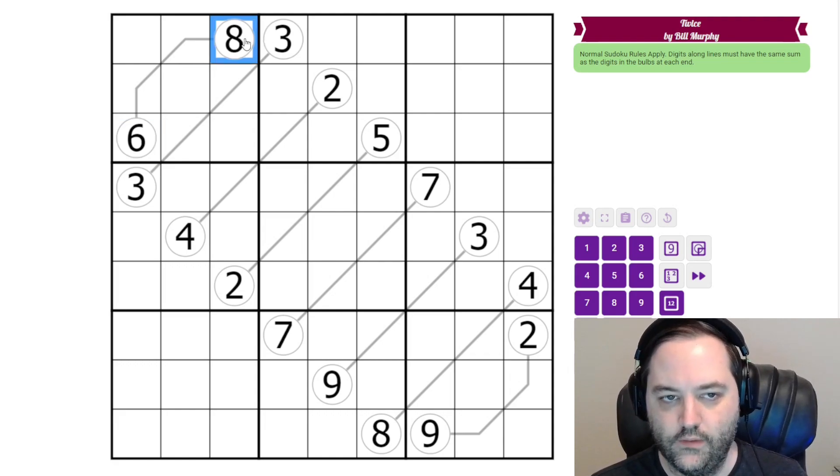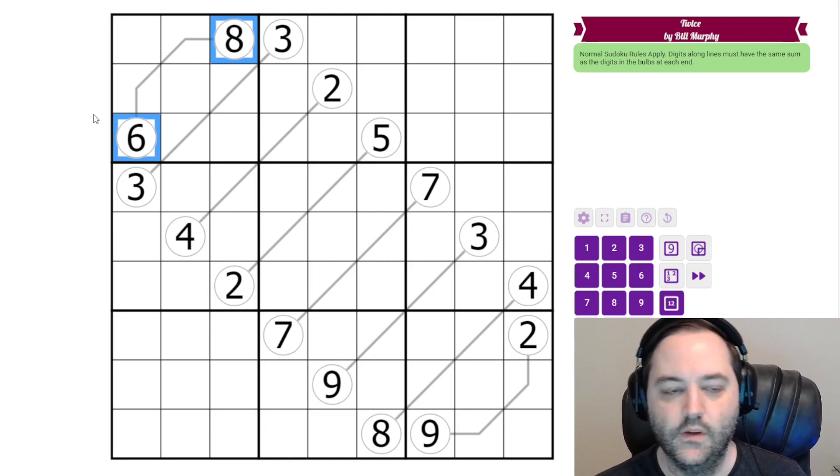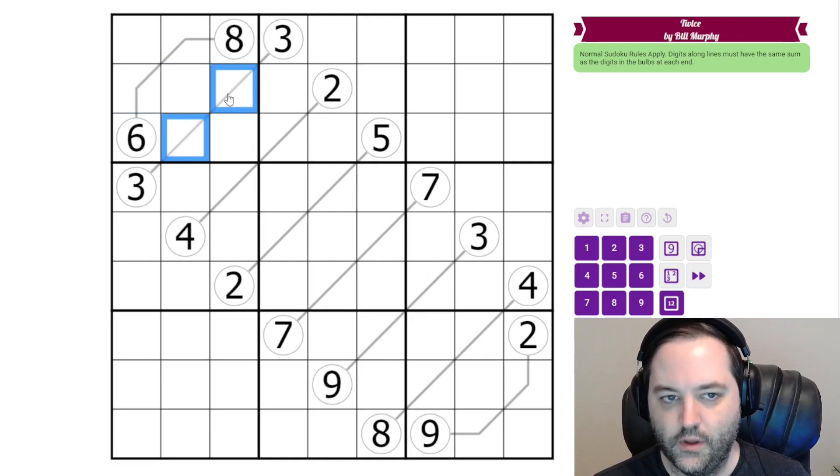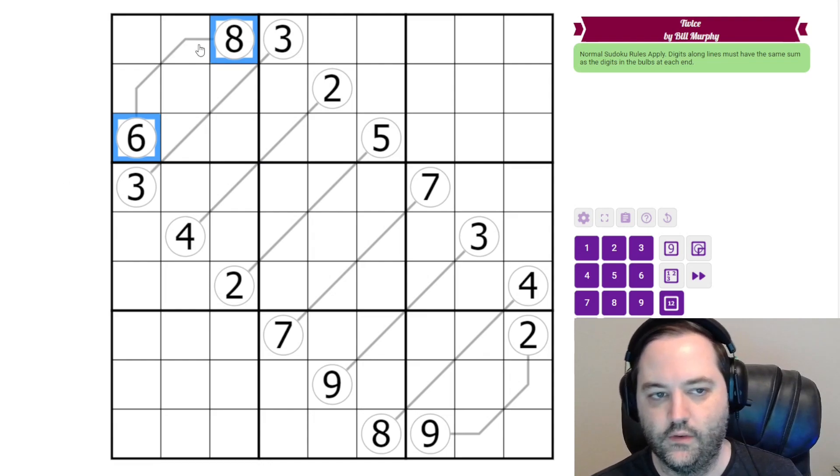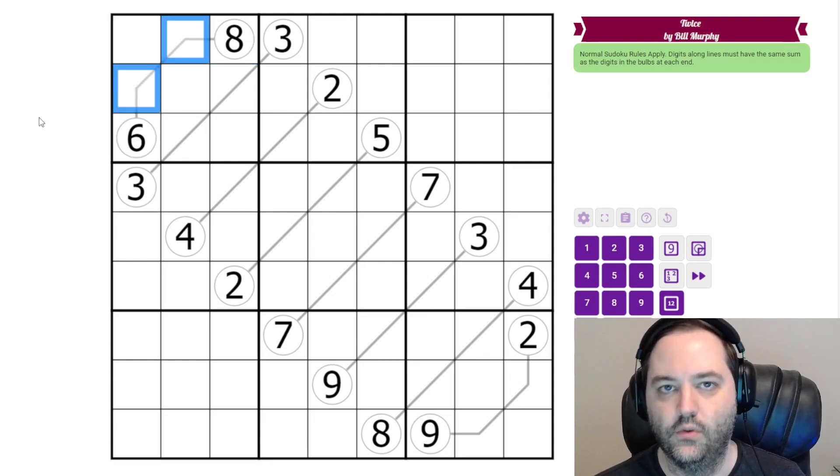And instead of the one circle being the sum of the digits on the line, the sum of the two circles is the sum of the digits on the line. In this particular puzzle all of the lines are two cells. So in all of these cases we're gonna have two digits in the circles summing to the same thing as two digits on the line. And those are the rules and we're just gonna start in box one and work our way down.